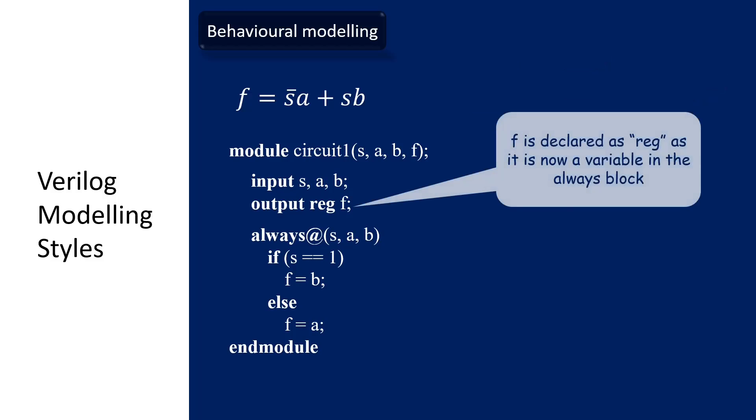The same circuit in the previous example using dataflow modeling can be modeled using the behavioral modeling like this. Where F is declared as reg, as it is now a variable in the always block. The module is described based on its behavior. Where if S equal to 1, the output F is equal to B. Otherwise, if S equal to 0, the output F is equal to A. And this will create the same circuit as in the previous example.